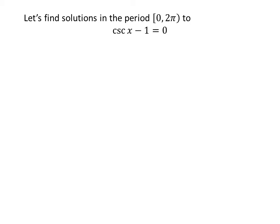Let us first find the solutions to the equation cosecant of x minus 1 is equal to 0 in the period 0 to 2π, as the cosecant function is periodic with period 2π. Taking 1 to the right hand side gives us cosecant of x is equal to 1. We know the value of cosecant of π/2 is 1.